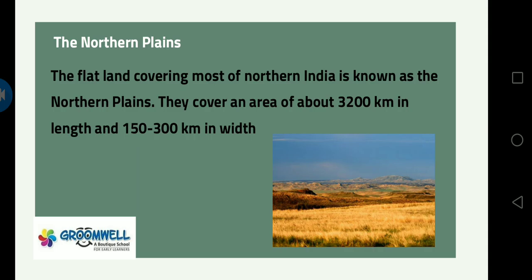Next topic is the Northern Plains. The flat land covering most of Northern India is known as the Northern Plains, also called the Indo-Gangetic Plains. They cover an area of 3200 km in length and 150 to 300 km in width.